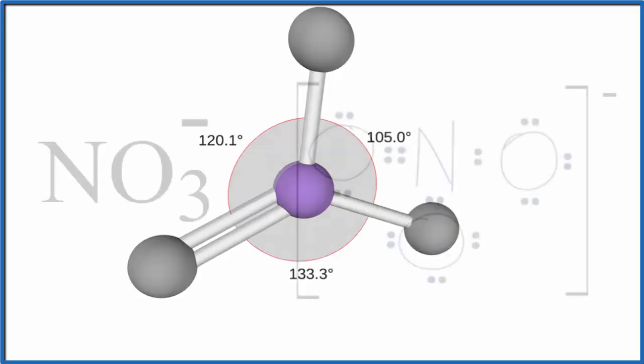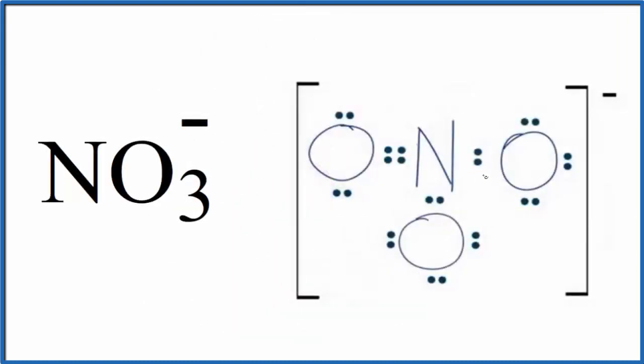Back to our Lewis structure. To recap, the lone pairs on the central atom do have an influence on molecular geometry. But for the nitrate ion, all of these electrons between atoms are involved in chemical bonds. So we have zero lone pairs.